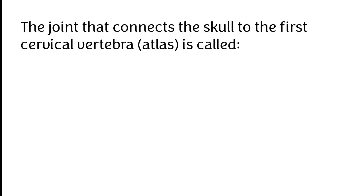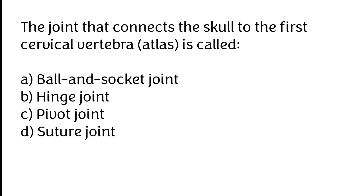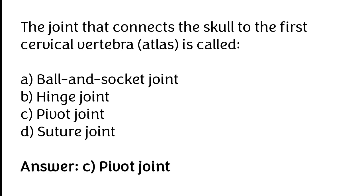The joint that connects the skull to the post-cervical vertebrae atlas is called: Bal and socket joint, hang joint, pheoid joint, suture joint. The correct answer is Option C. The joint that connects the skull to the post-cervical vertebrae atlas is called pheoid joint.